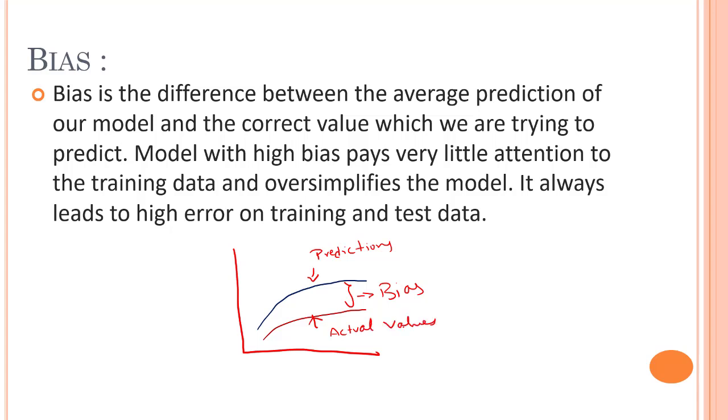The difference between these two is known as bias. When the bias is high, the assumptions made by our model are too basic. The model can't capture important features of our data. This means our model hasn't captured patterns in the training data and hence cannot perform well on the testing data too. We have high error rates for both of these.